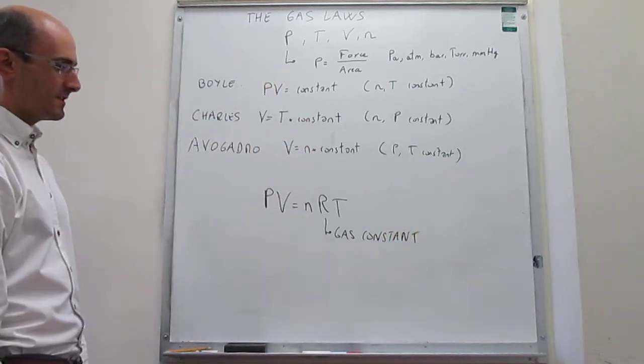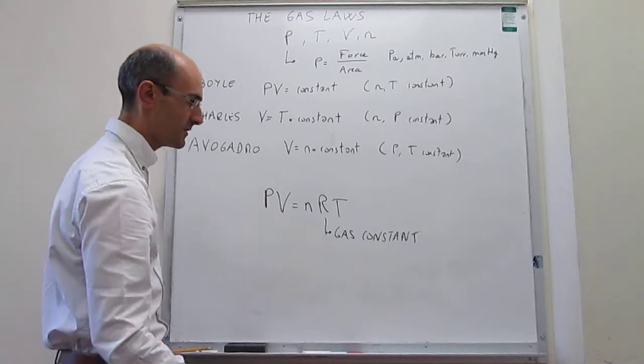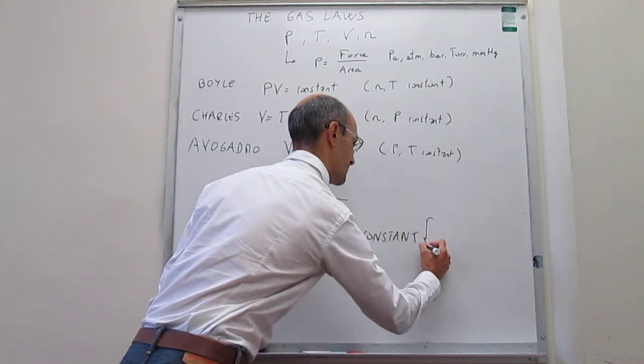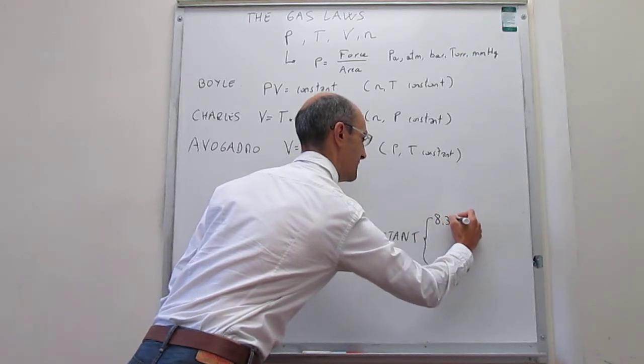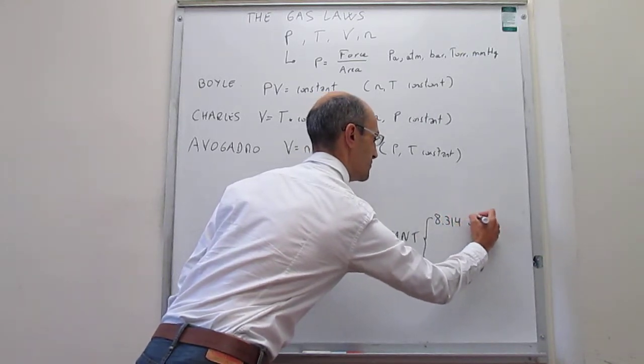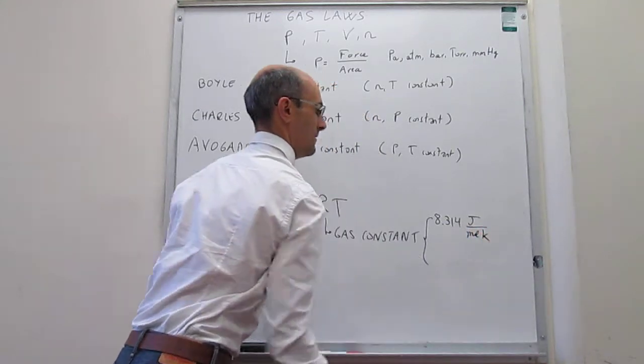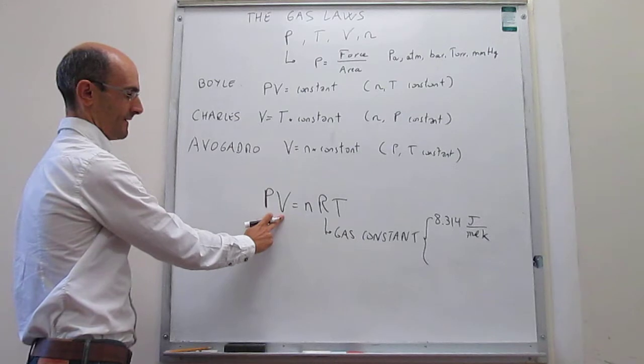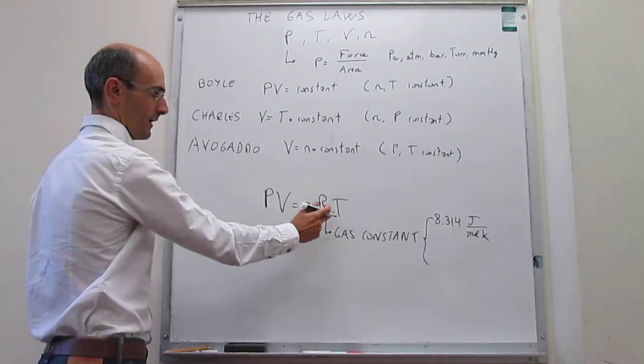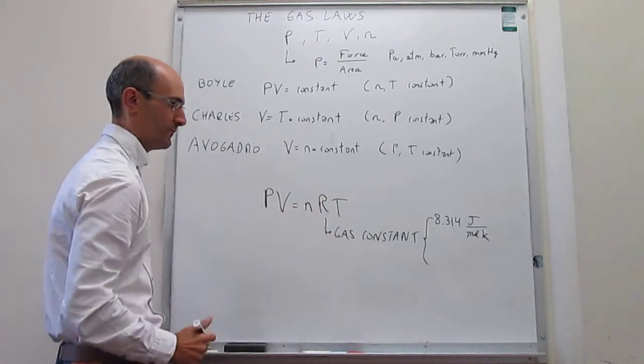The gas constant comes in various flavors. If you're using SI units for your calculations, the value of R is 8.314 joules per mole Kelvin. But if you're using atmospheres for pressure and liters for volume, and the temperature is in Kelvin, and you're using moles, then you're using 0.08206 L atm per mole Kelvin.